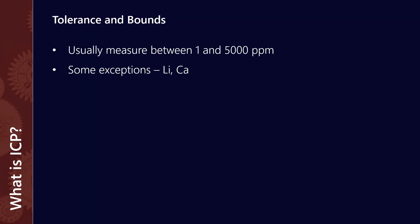The other thing that's worth noting is the tolerance and bounds. So what are we capable of measuring? Generally, for most of the different elements, we can measure between 1 and 5000 ppm. Now we don't typically see that much lithium in oil analysis samples, unless maybe there's some contamination with a lithium or a lithium complex grease. And calcium can actually be tested to a much higher threshold. So we can test from anywhere from 1 to about 20,000 ppm in that case.